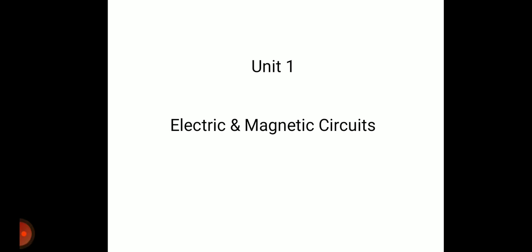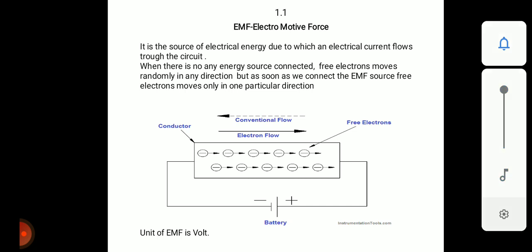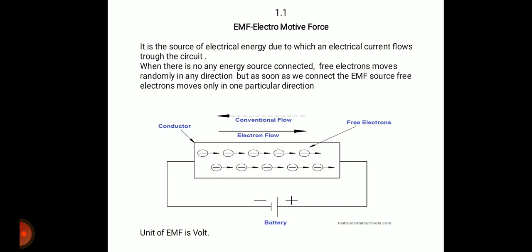Welcome to the BE lecture series. We are going to see the first unit, which is the electric and magnetic circuit. The first point is EMF — electromotive force. EMF is the source of electrical energy due to which an electric current flows through the circuit. For example, a battery is the source of electrical energy.